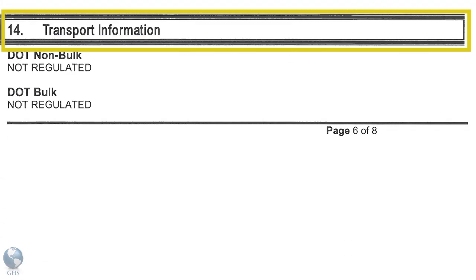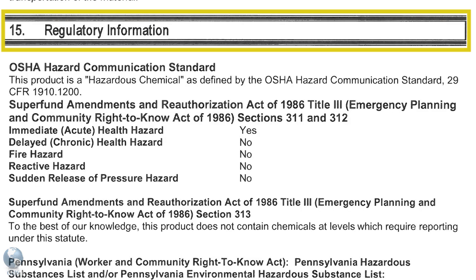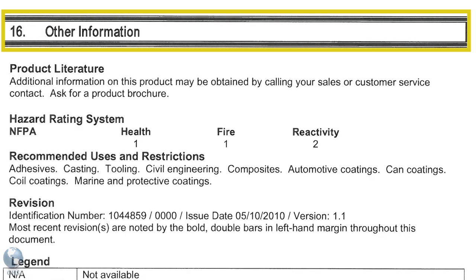Section 14 - Transport Information provides guidance on classification information for shipping and transporting hazardous chemicals by road, air, rail, or sea. Section 15 - Regulatory Information identifies the safety, health, and environmental regulations specific to the product that are not indicated anywhere else on the SDS. Section 16 - Other Information includes the date of preparation or last revision of the SDS.